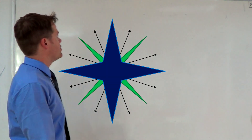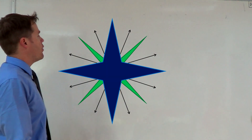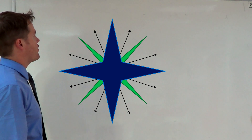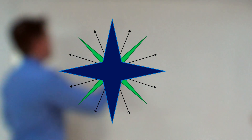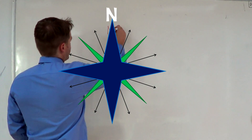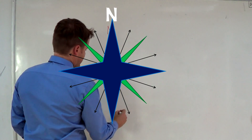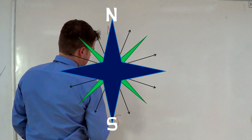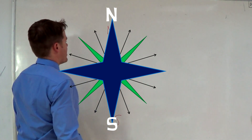Firstly we need to know where north and south are, and I'm sure everybody knows that north is at the top of a map and south is at the bottom of the map.